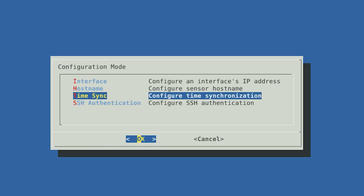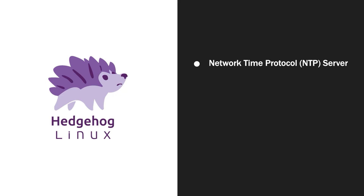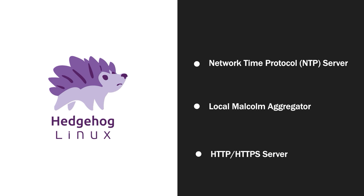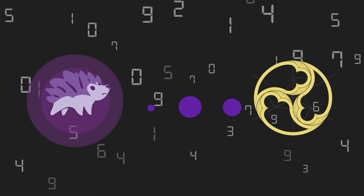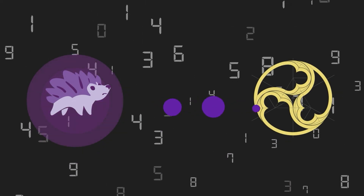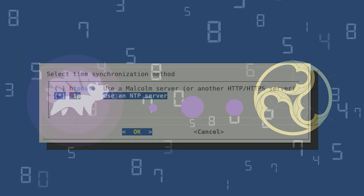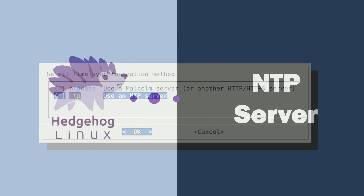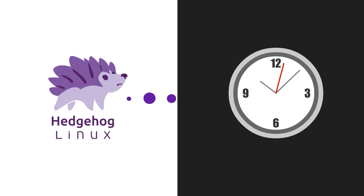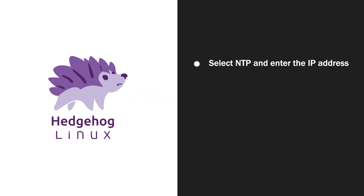Next, we need to synchronize the time of your Hedgehog sensors with a network time protocol or NTP server, a local Malcolm aggregator, or another HTTP or HTTPS server. Synchronizing the time is a way for you to make sure that the system date and time of network sensors are synced with the Malcolm instance. If your organization uses NTP, then you can point it at an NTP server in your network to use as your source of time.